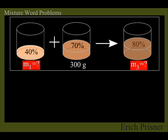The constants are M2 equals 300, P1 equals 0.4, P2 equals 0.8, P3 equals 0.7 and the variables are M1 and M3.